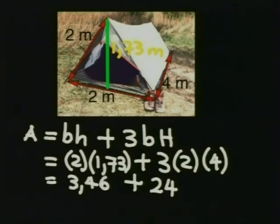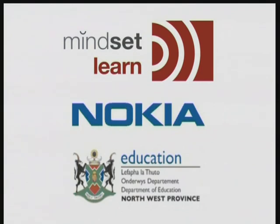So our total surface area for our triangular prism is 27.46 meters squared. I'll see you next time.